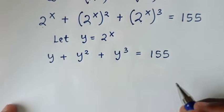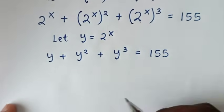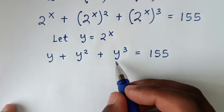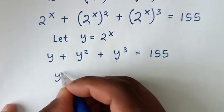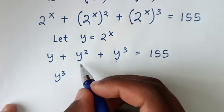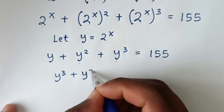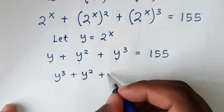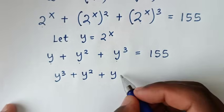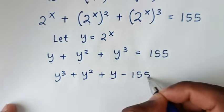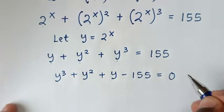From here, we will take 155 to the left side. So we will start with the largest power, which is y power of 3, then plus y squared, then plus y. We will take this to the other side to be minus 155, is equal to 0.